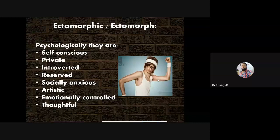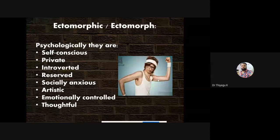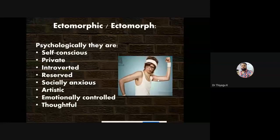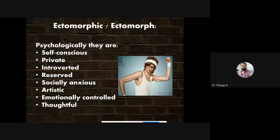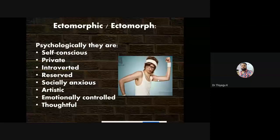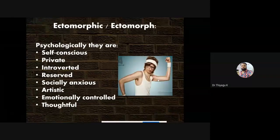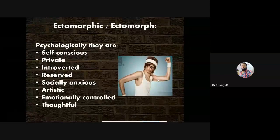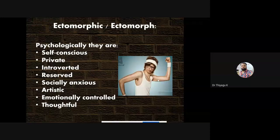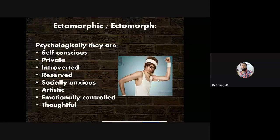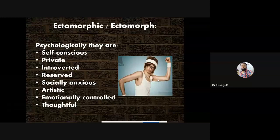Ectomorphic people are socially anxious — they have some kind of fear when seeing large crowds. However, they have good characteristics like being artistic, because those who are very introverted have a lot of thinking power, and that thinking power leads to some kind of creativity. That creative sense develops artistic traits — they are good at drawing, good musicians, and so on. They are emotionally controlled and thoughtful, and their private thinking process may help them think in different perspectives. Most lean people have some kind of creativity sense, according to Sheldon.